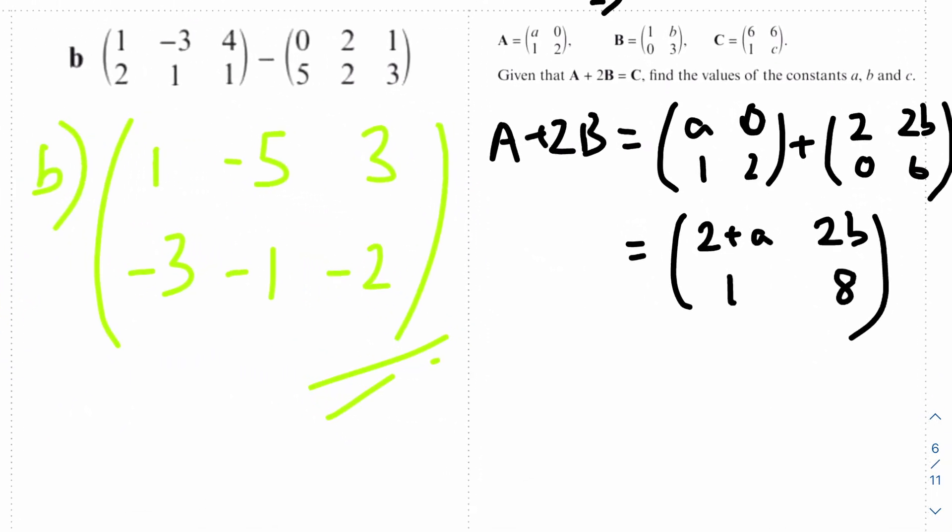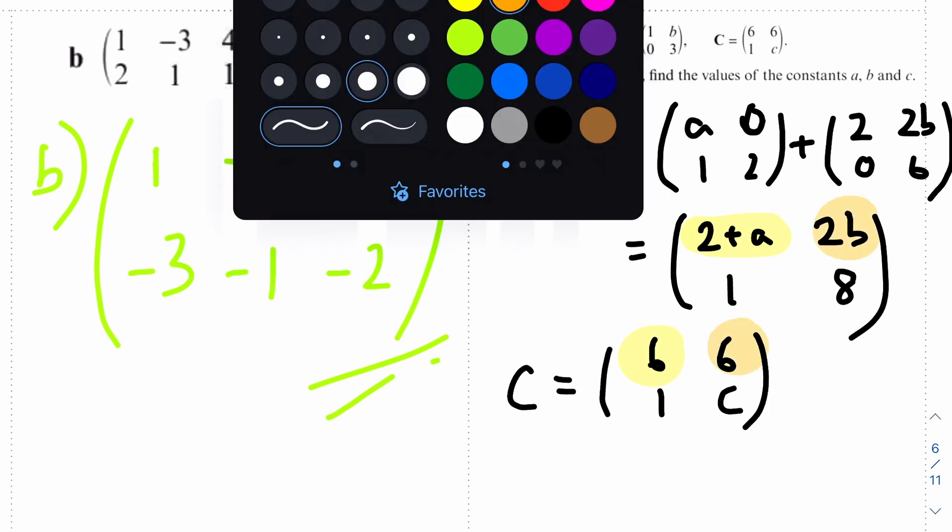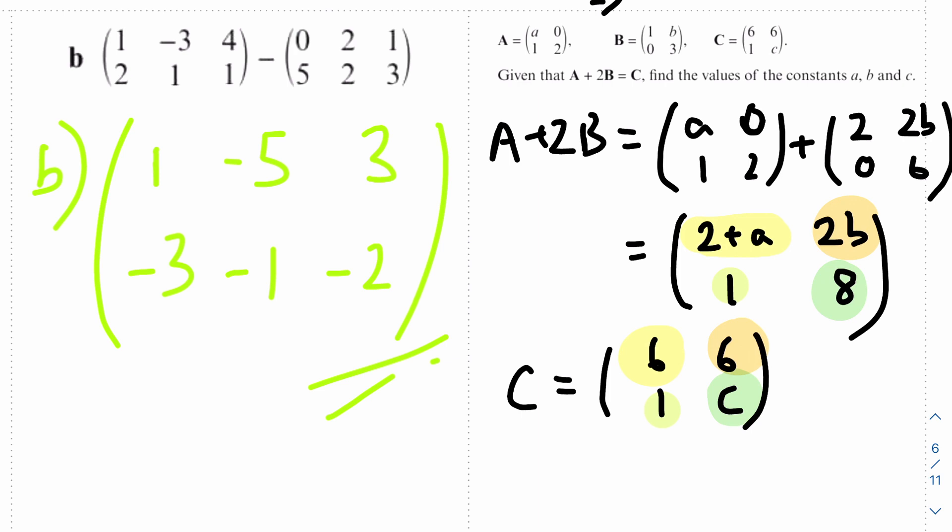And we know that a plus 2b equals c, and we know that c is equal to 6, 6, 1, c. Therefore we can basically just equate terms, equating coefficients, because we know that these two are the same, they're equal to each other. So therefore this term right here will be equal to this term. This term will be equal to this term, and 1 equals 1 as you can see. And the last term is 8 is equal to c. So therefore we can just solve the values. Therefore, a equals 2 plus a equals 6 so a equals 4. b, 2b equals 6 so b equals 3, and c equals 8. And that's the final answer.